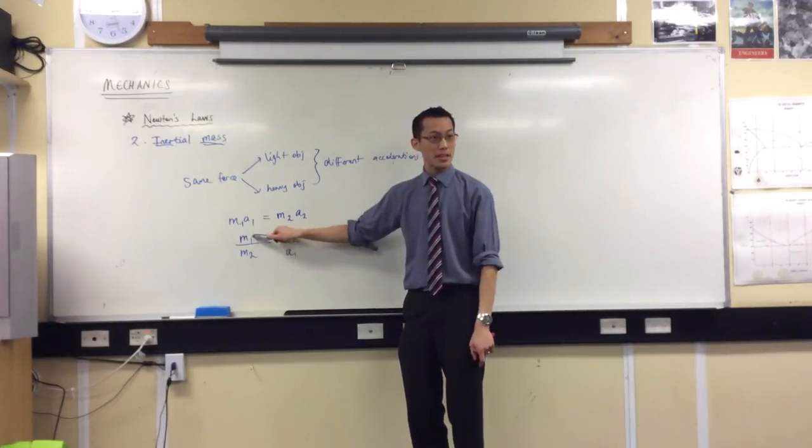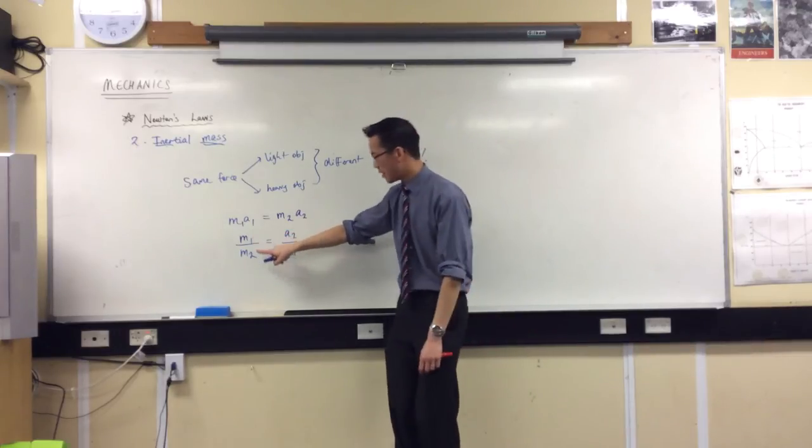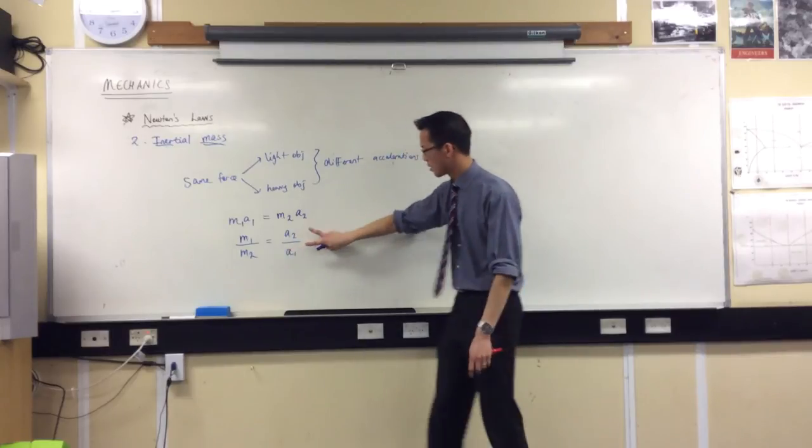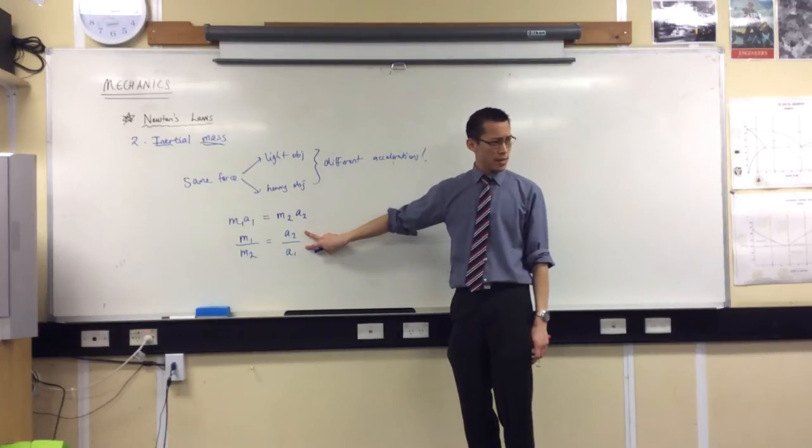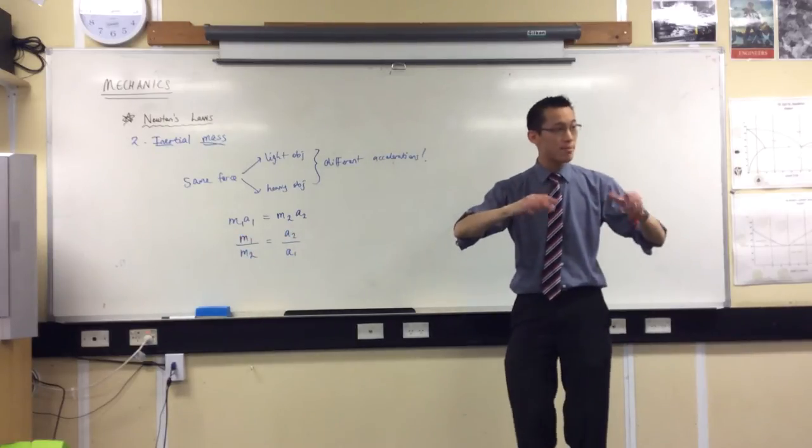The ratio between these two masses. For example, suppose this was the heavier object and this was the lighter one. More mass here, less mass here. What does it mean for these guys?